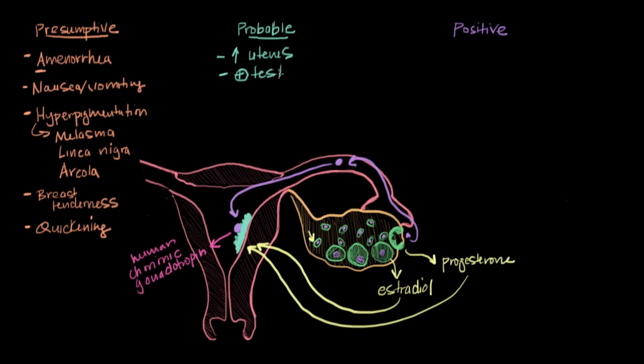So most pregnancy tests, whether they're blood tests or whether they're urine tests, detect beta-HCG. They detect that human chorionic gonadotropin. And beta-HCG is, remember, made after the implantation occurs. And it can be detected in the urine or in the blood anywhere between 10 to 14 days after conception.